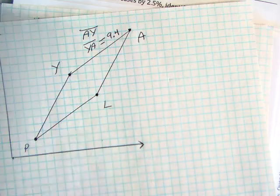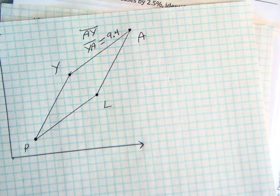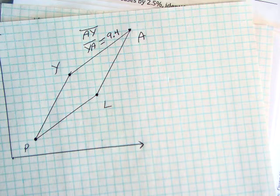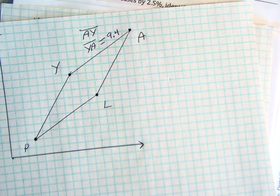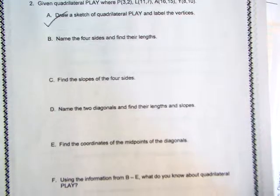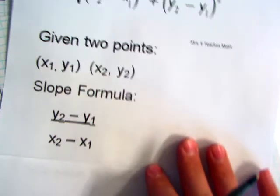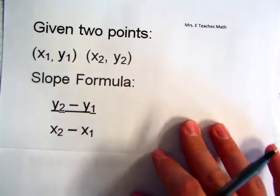You'll do the exact same thing for the three other sides. Some of them may have the same length. Some of them may not. It's up to you to find. Next up, name the slopes of the four sides. To find the slope, we're going to use something called the slope formula. Given two points, X1, Y1, or X2, Y2...